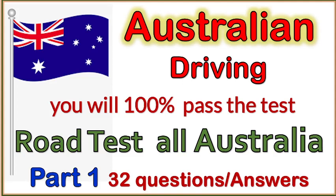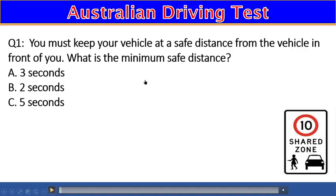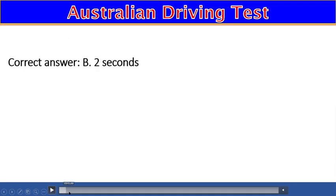Question 1: You must keep your vehicle at a safe distance from the vehicle in front of you. What is the minimum safe distance? A) Three seconds, B) Two seconds, C) Five seconds. The right answer is B — two seconds.